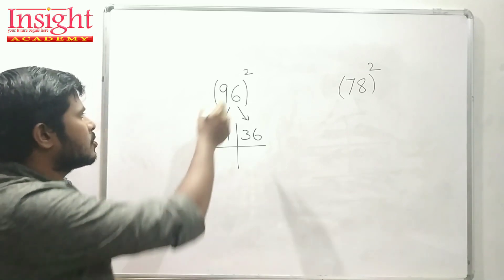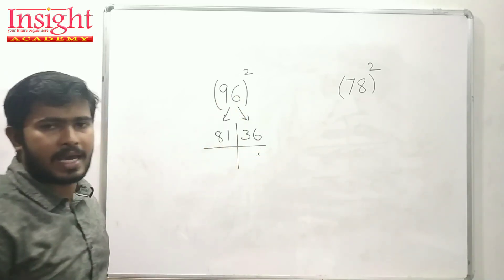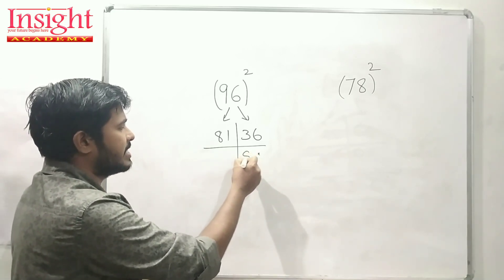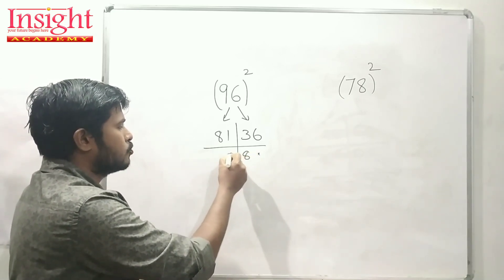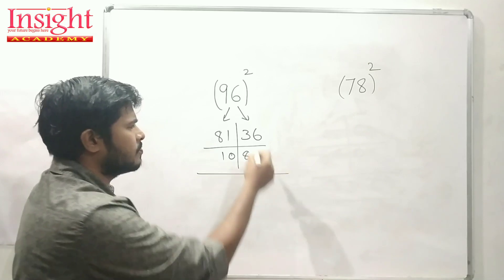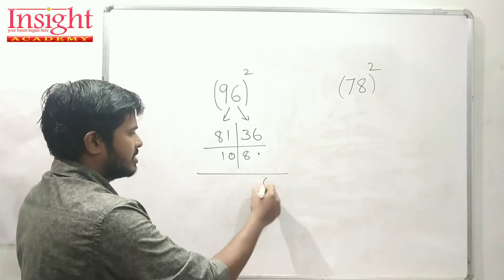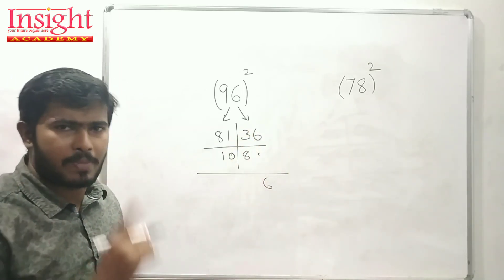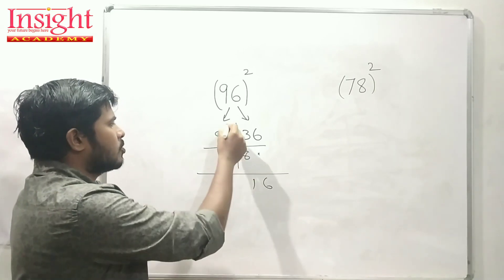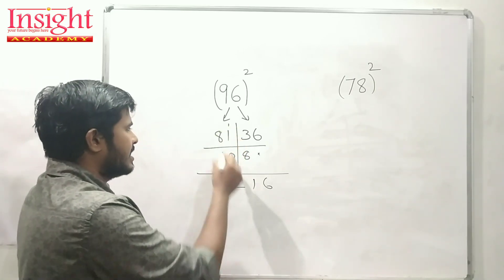Now, if we look at that 18, we have a blank. Next, we have 8. Next, we have 6, 3, 8, 10, 2.